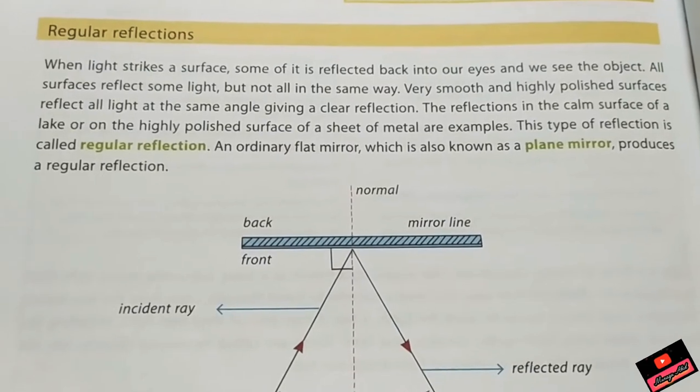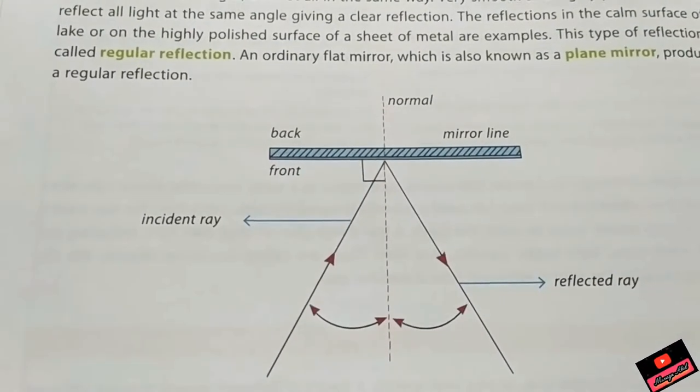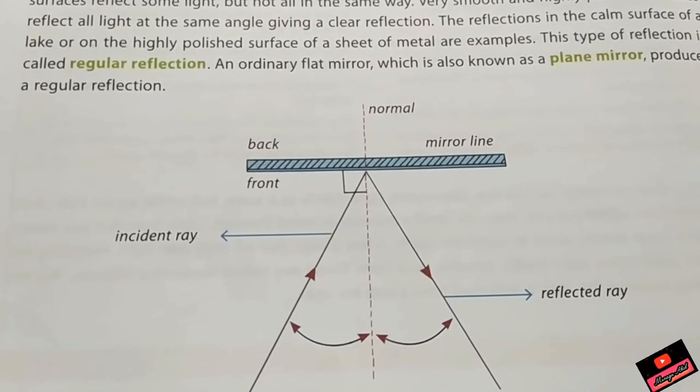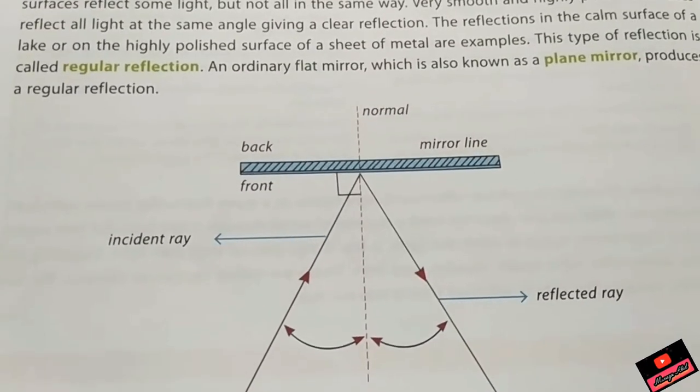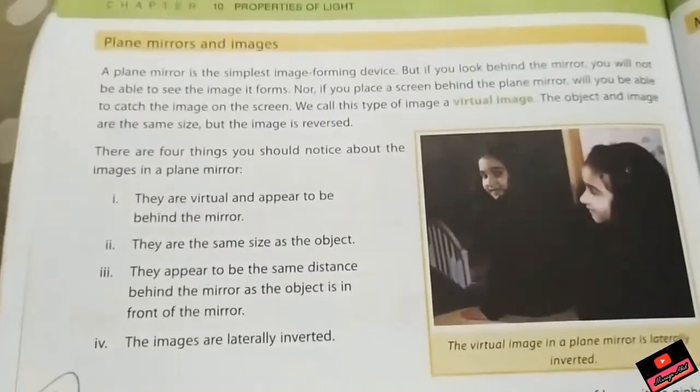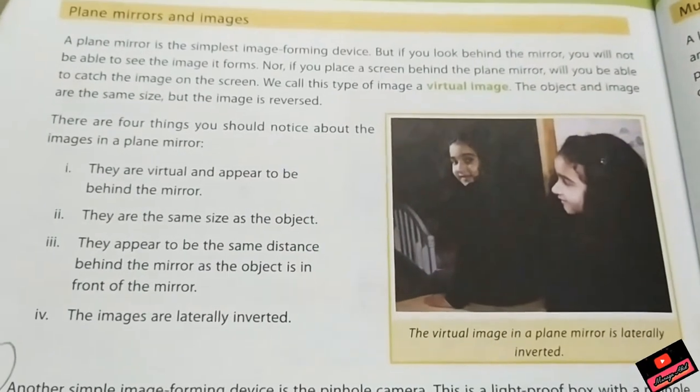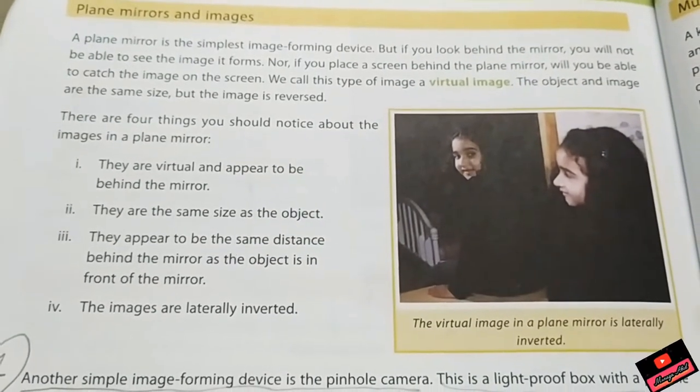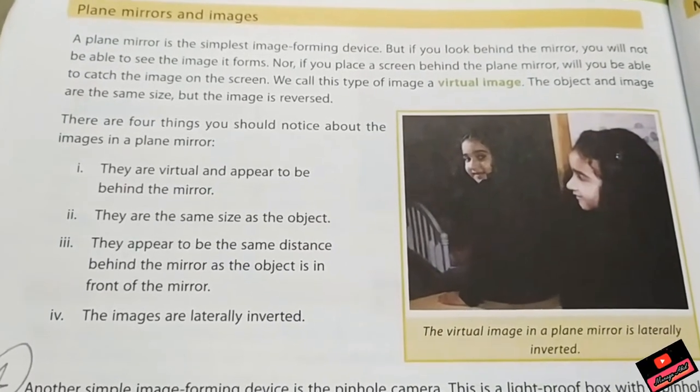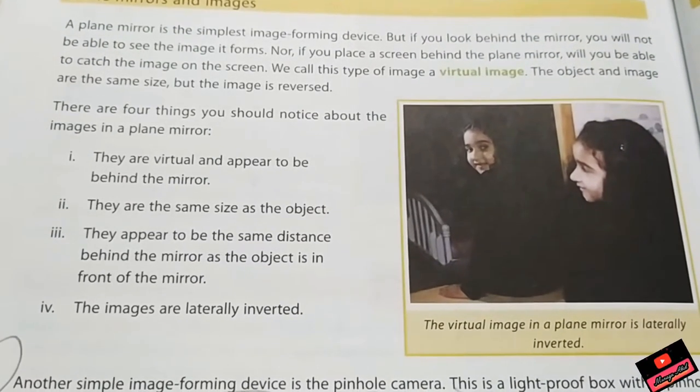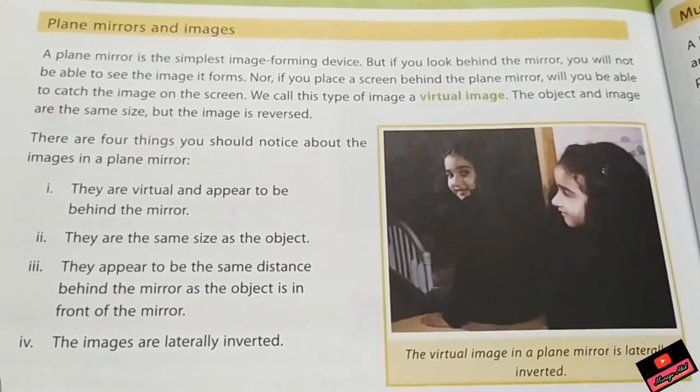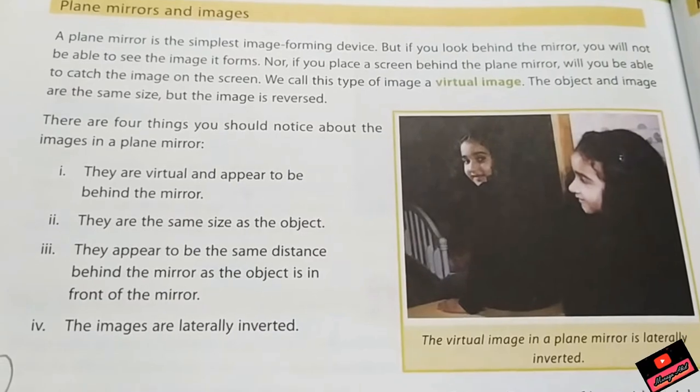When the incident ray strikes a plane mirror, it is inverted back and forms an image. Like this girl sitting in front of a mirror, she can see herself due to reflection of light. The image that is formed on the plane mirror is a virtual image, exactly the size of the girl. It appears just like her.